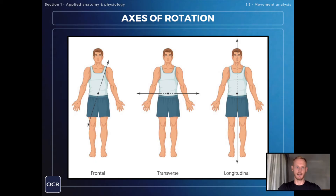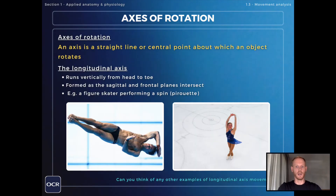The final axis that you need to know about is the longitudinal axis, which runs vertically from head to toe — imagine a line that runs through the head all the way down to the feet. For example, a figure skater rotates around the longitudinal axis when performing a spin, otherwise known as a pirouette.